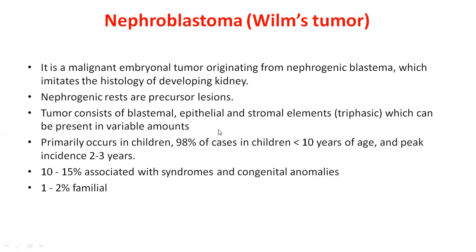Histologically, Wilms tumor is a triphasic type of tumor containing three elements. The first is the blastemal component, seen histologically as small blue cells. The second is the epithelial component, representing glomeruli, tubules, or papillary structures. The third is the stromal element, representing supporting tissue. All three elements are always present but variable in amount — sometimes the epithelial component can be predominant.